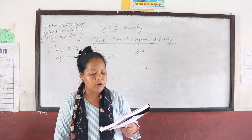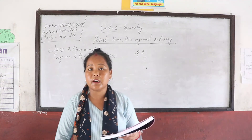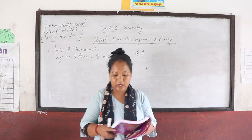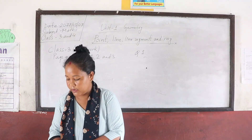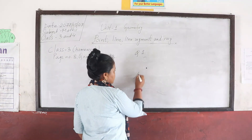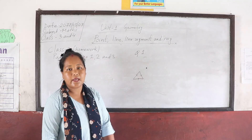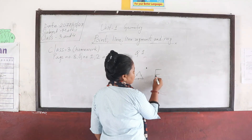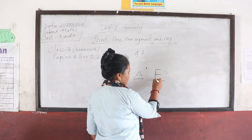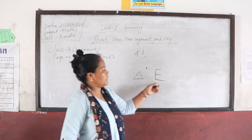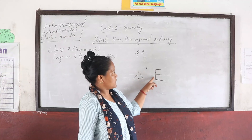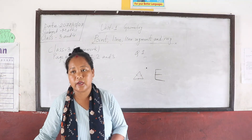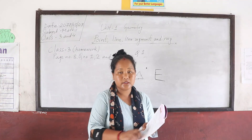Question number 3: find the number of line segments using the given figures. Count the number of line segments and write them — you only need to write the number, not their names. For example, a triangle has one, two, three line segments. The letter E has four line segments — one vertical and three horizontal. Count and write the number of line segments for each figure.